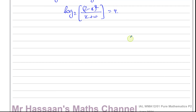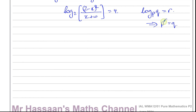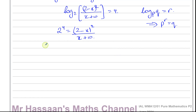Now I can go ahead and rewrite this in index form. Using the fact that log base p of q equals r can be rewritten as p to the power of r equals q — the base is p, the power is r, and the input is q. So in this case, 2 to the power of 4 equals (2 minus x) squared over (x plus 10). Now there is no logarithm and I can solve for x.